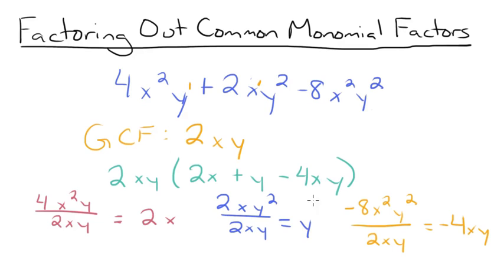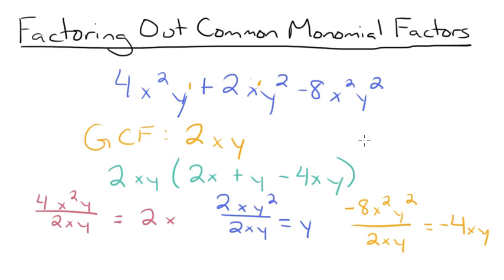So we have 2xy times (2x plus y minus 4xy), and this is the factored form of our expression. Remember, one way to check your work is by distributing your factored expressions — you should always get the original polynomial. If you don't, double check your work because you might have forgotten something along the way. I hope this video on factoring out common monomial factors was helpful. Thanks for watching and happy studying!